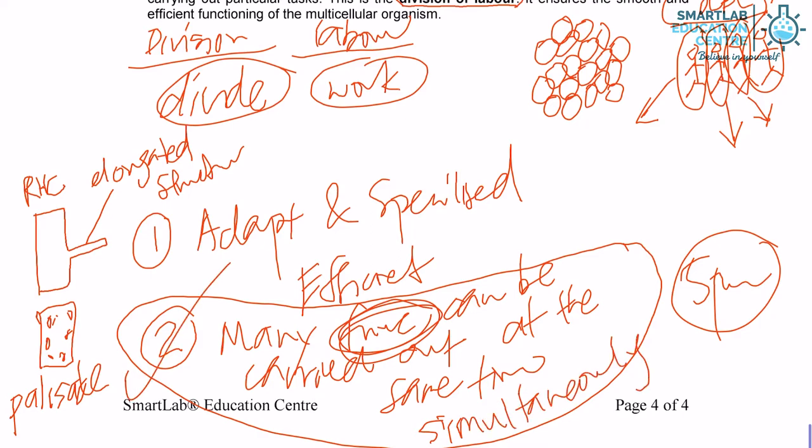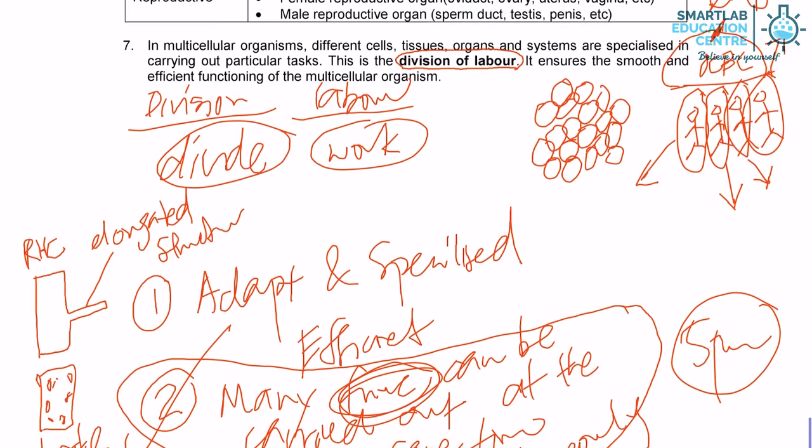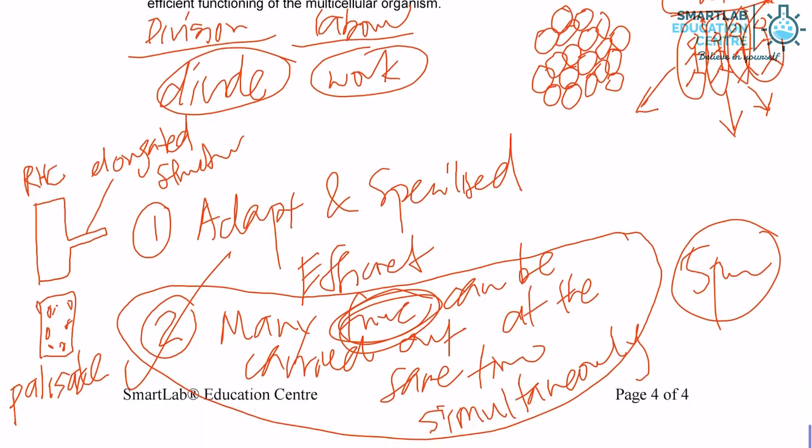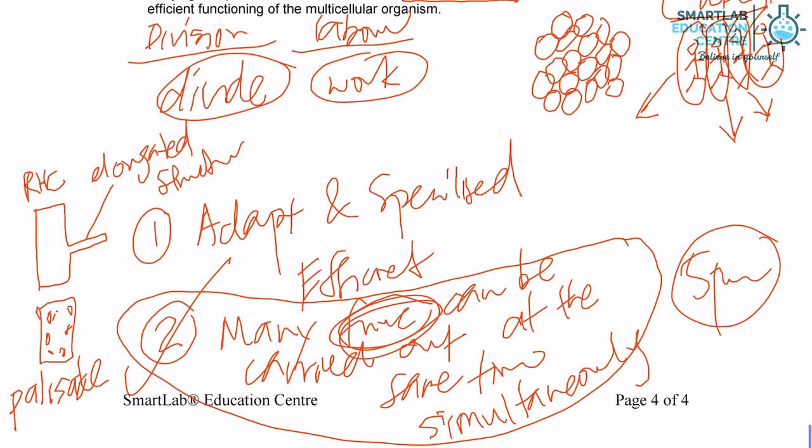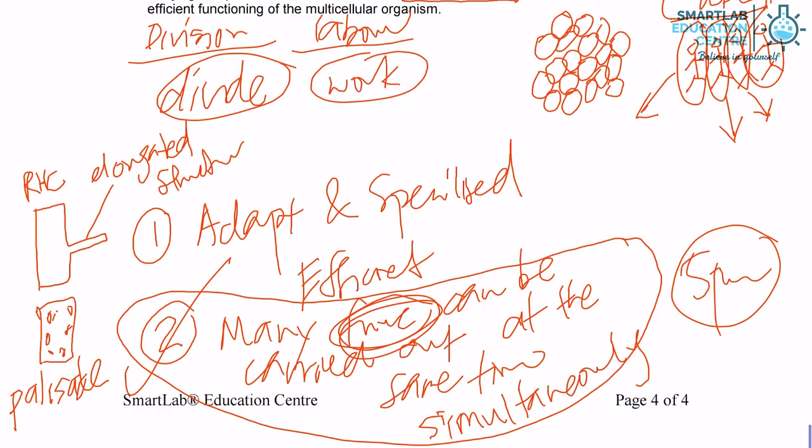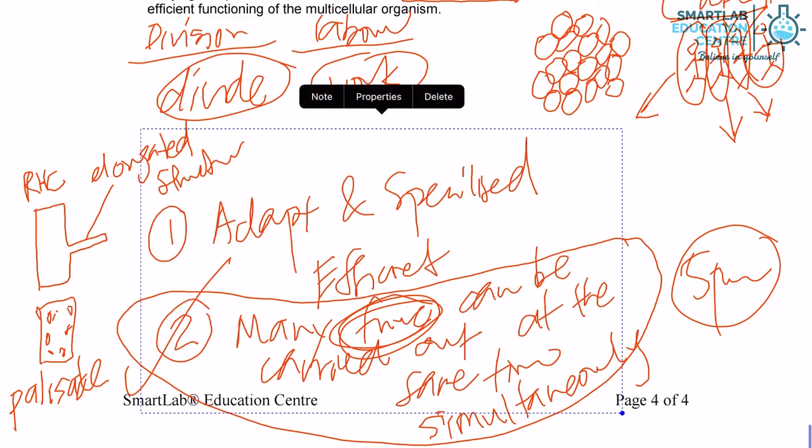That is a very huge advantage. So, when they ask you the advantage of division of labor, tell them: by having division of labor, your cells can adapt and specialize. Number two, many functions can be carried out simultaneously.